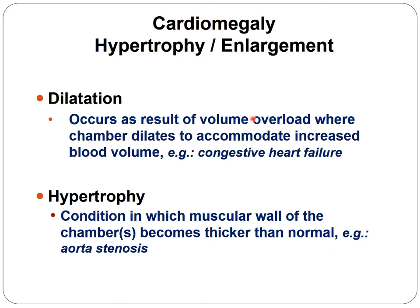Cardiomegaly or hypertrophy enlargement involves at least two types of enlargement. One is called dilation — dilation occurs as a result of volume overload, when the chamber dilates to accommodate increased blood volume. This happens in congestive heart failure. Another type is called hypertrophy, when the muscular wall of the chamber becomes thicker than normal and the fibers enlarge, making the muscle stronger.